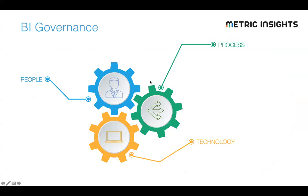When you think about governance, it's very important to think about both pieces of the puzzle and come up with a solution that addresses both data as well as the front-end analytics that users are consuming. Gartner has commented that through 2022, only 20% of organizations investing in information governance will succeed in scaling their initiatives across the enterprise. That means 80% of governance initiatives are going to fail — a staggering failure rate.